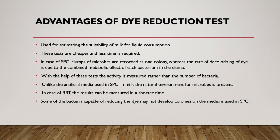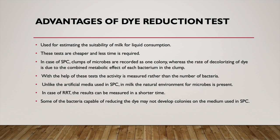The advantage of the dye reduction test is that you can estimate the suitability of milk for consumption. These tests are cheap and require less time compared to other methods. Unlike the standard plate count (SPC) where individual colony counts are made, here we determine the de-colorizing of dye due to the metabolic effect of individual bacteria present in clumps — measuring the activity of the whole group rather than counting individual organisms. It is therefore a qualitative test, not quantitative.